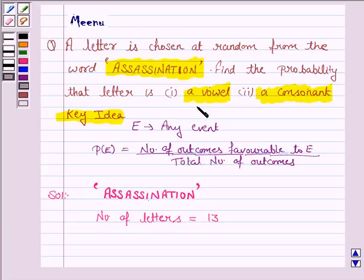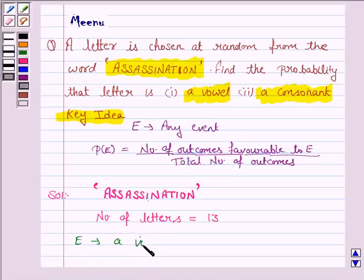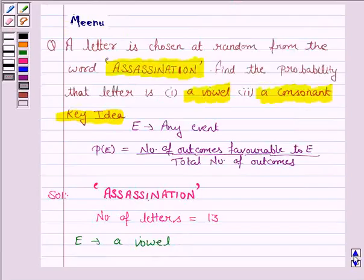For the first part, we have to find the probability of choosing a vowel. So here, E is the event of choosing a vowel. Now there are 6 vowels in this word.